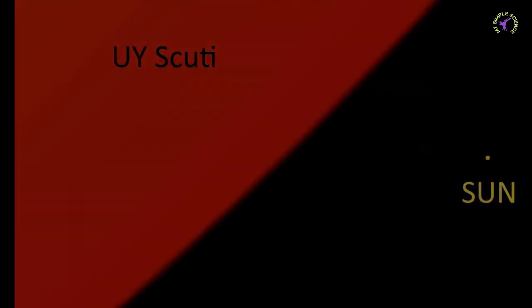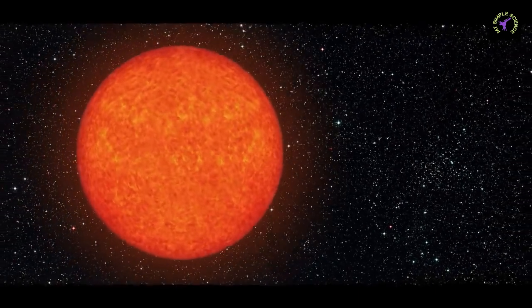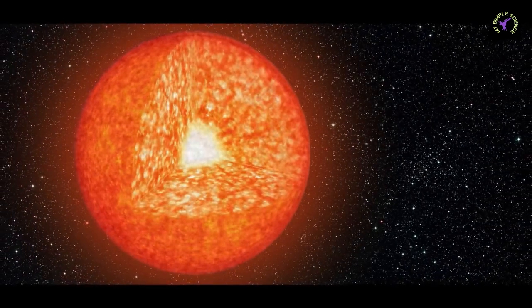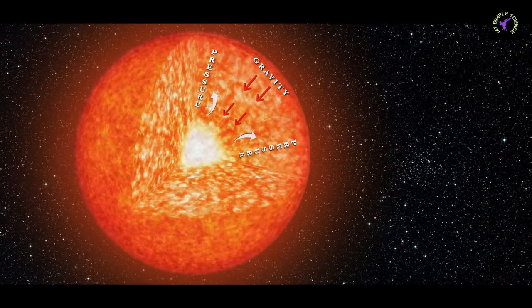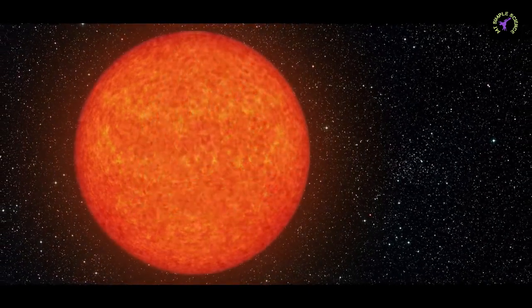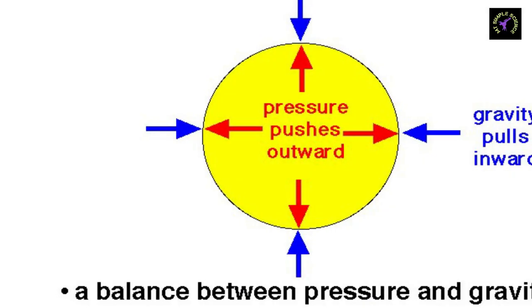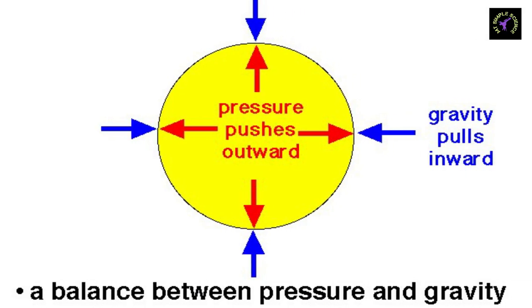Stability of main sequence stars for billions of years is because of the balance of two forces acting in opposite directions. One is gravity, which acts towards the core, and the force from tremendous pressure of gases inside the core, which acts away from the core, opposite to gravity.